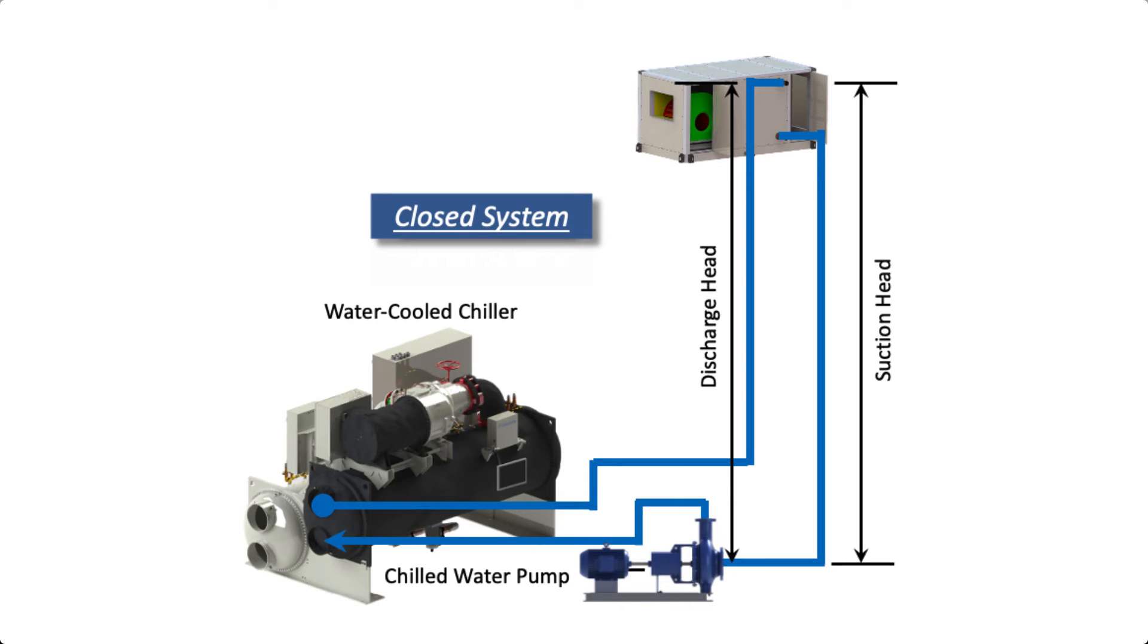In a closed loop system, the water moves around in a loop from supply to return and back. At no point does the water leave the system and become exposed to the atmosphere. Pumps that are used in closed loop systems like chilled water, heating hot water, and closed loop condenser water systems don't usually need to worry about static pressure. The reason static pressure is often not a factor is that the supply and return pipes run the same height and one cancels out the other in static pressure. The predominant pressure loss in closed loop systems come from the friction created by the flow passing through the pipes, the valves, the fittings, and system components like coils.